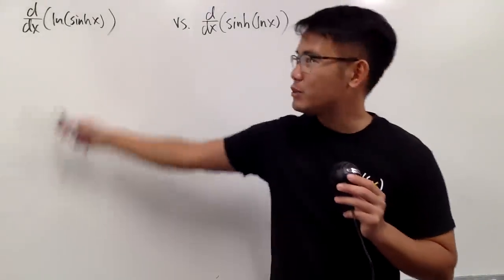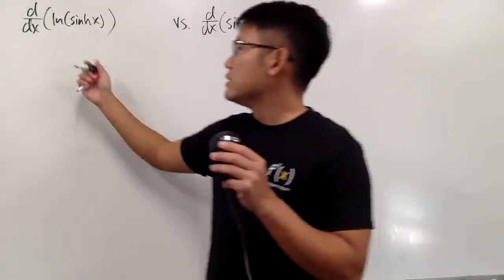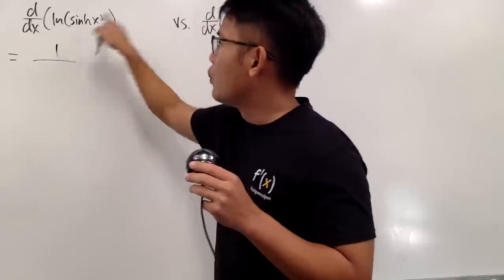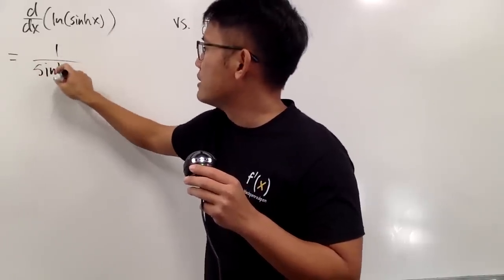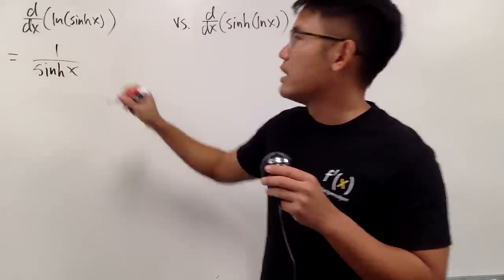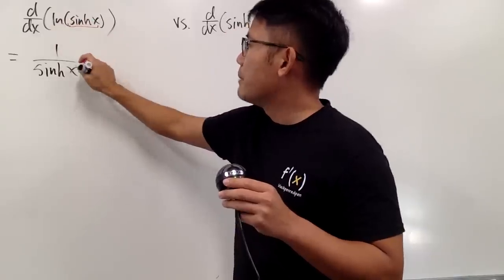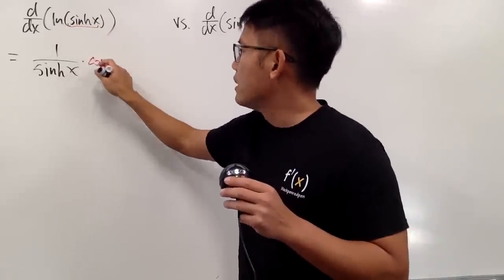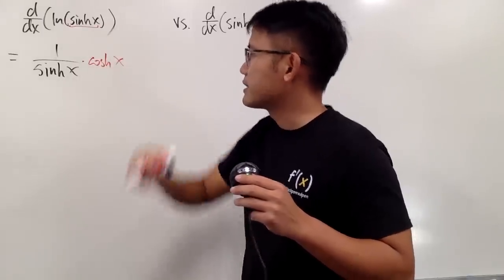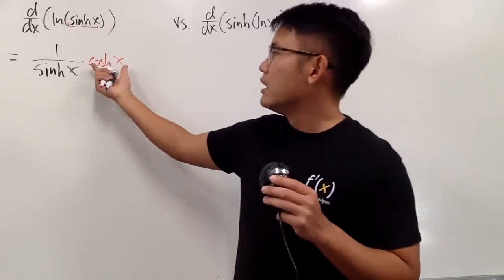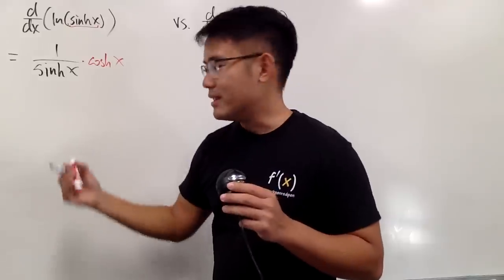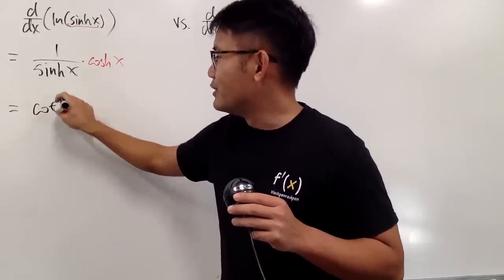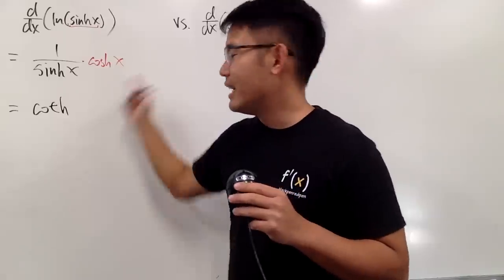This right here is actually easier because it only takes two lines. To differentiate ln of something, we just do 1 over whatever that is, which is sinh x. And then, because of the chain rule, we have to multiply by the derivative inside. The derivative of sinh is positive cosh, and the input is still x. In the end, we see cosh over sinh, and we can simplify that and write it as hyperbolic cotangent x.